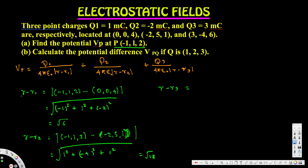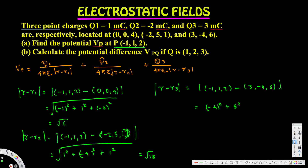For the third charge, |r - r3|: r = (-1, 1, 2) minus r3 = (3, -4, 6). Subtracting: (-1-3)² + (1-(-4))² + (2-6)² = (-4)² + (5)² + (-4)² = 16 + 25 + 16 = 57. So |r - r3| = √57.